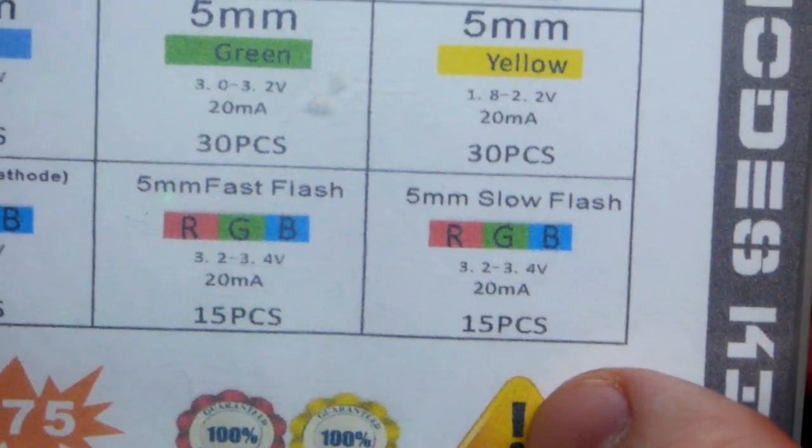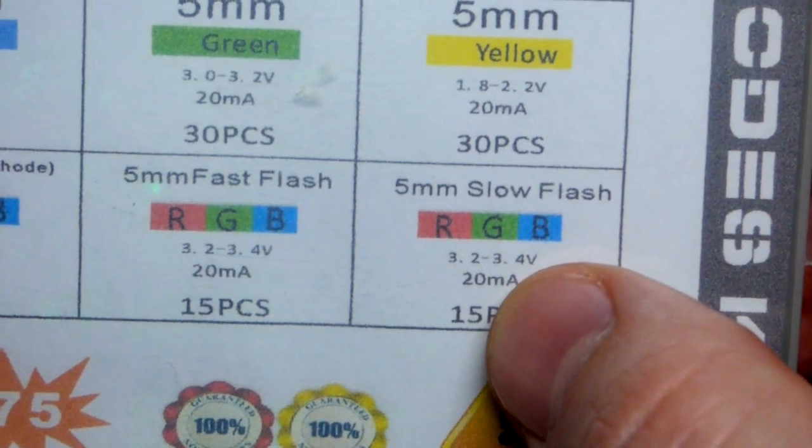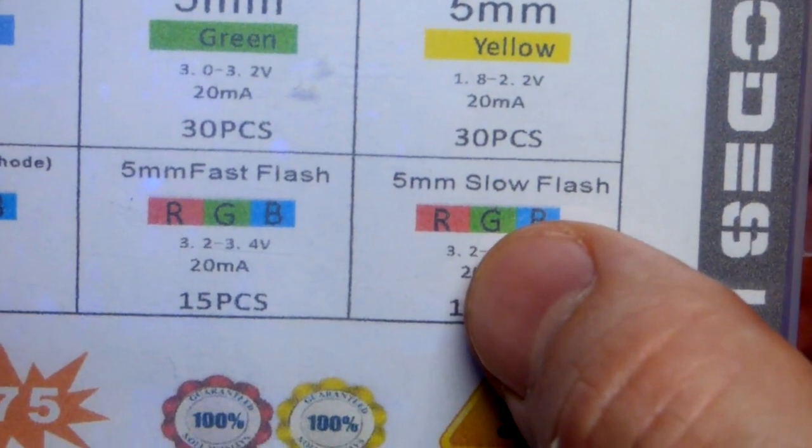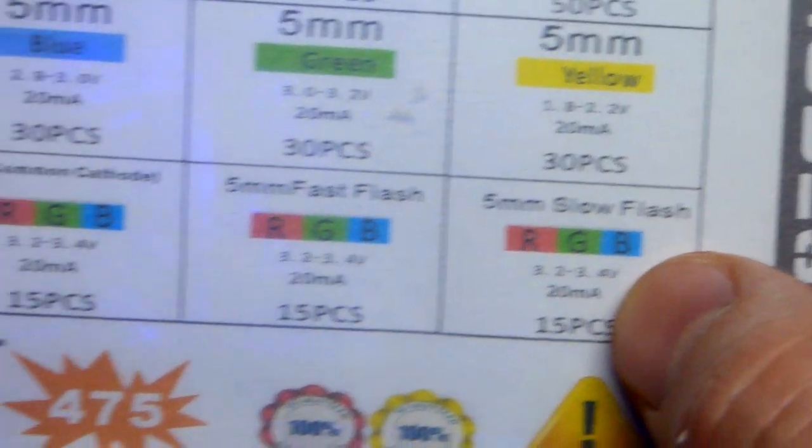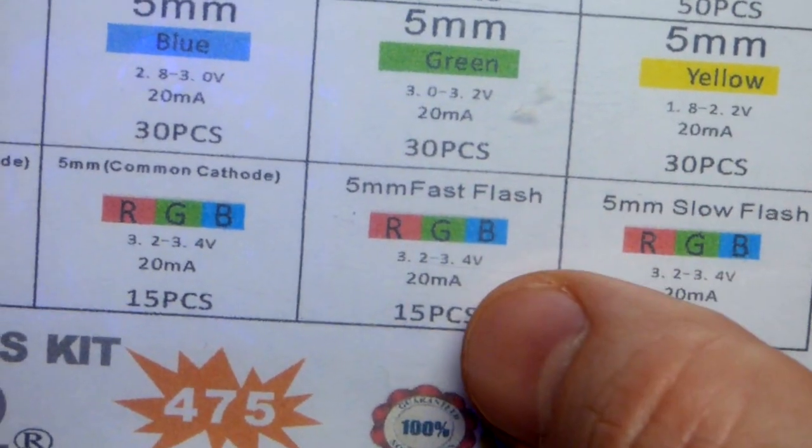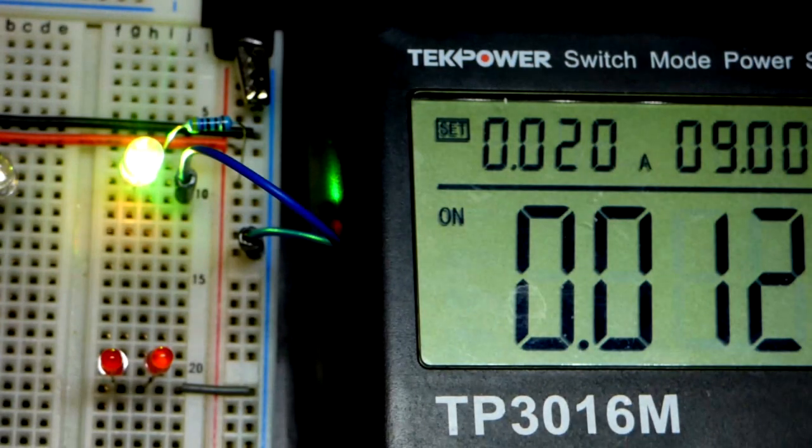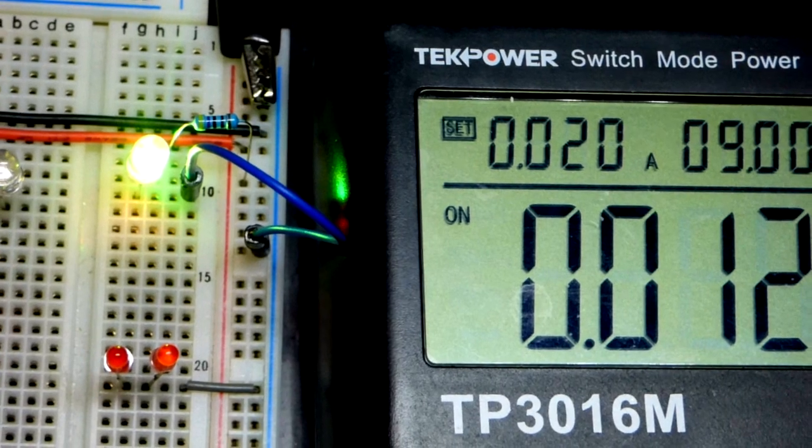It has a maximum current of about 20 milliamps and a forward voltage of about 3.2 to 3.4 volts, same with the fast flashing one. They're 5 millimeters, so they're larger than the 3-millimeter LEDs I normally use in my projects.